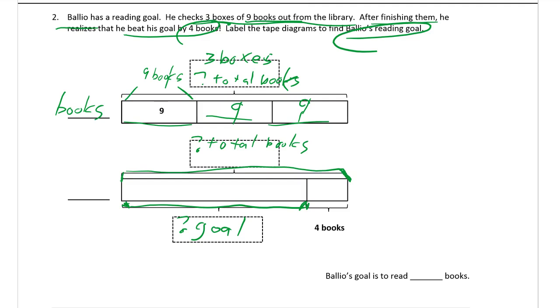We know that this is, we know he has 4 extra books because it's his goal. His goal plus the 4 extra is the total of what he read. So first we've got to figure out what he read. The total. Total books. So what do we have? 9 times 3, or 3 nines, 3 times 9. 27 books.